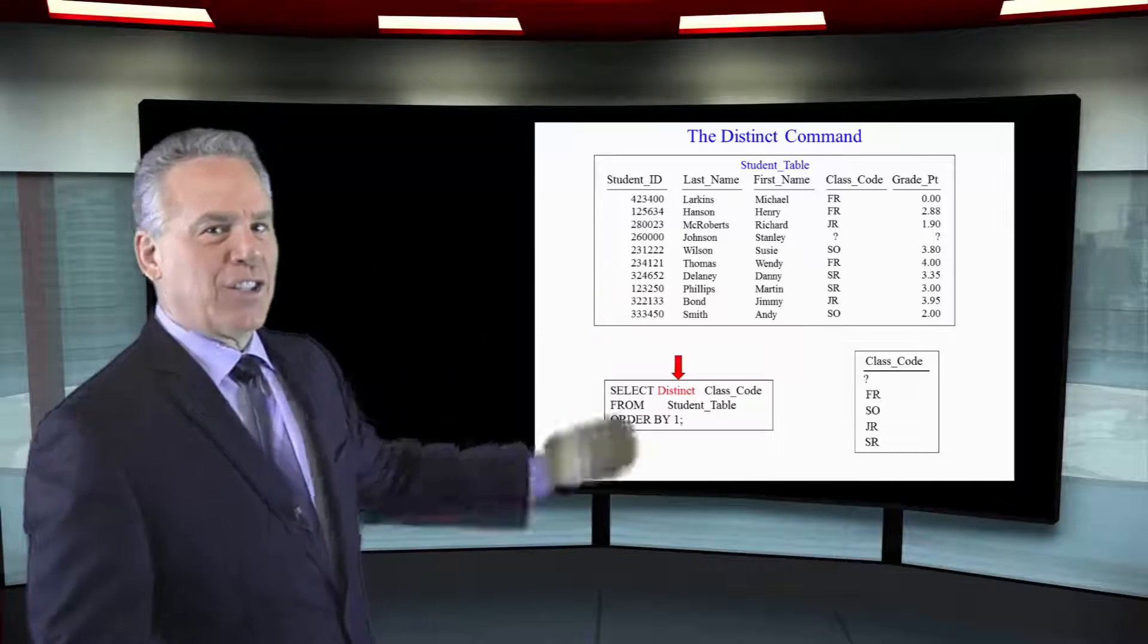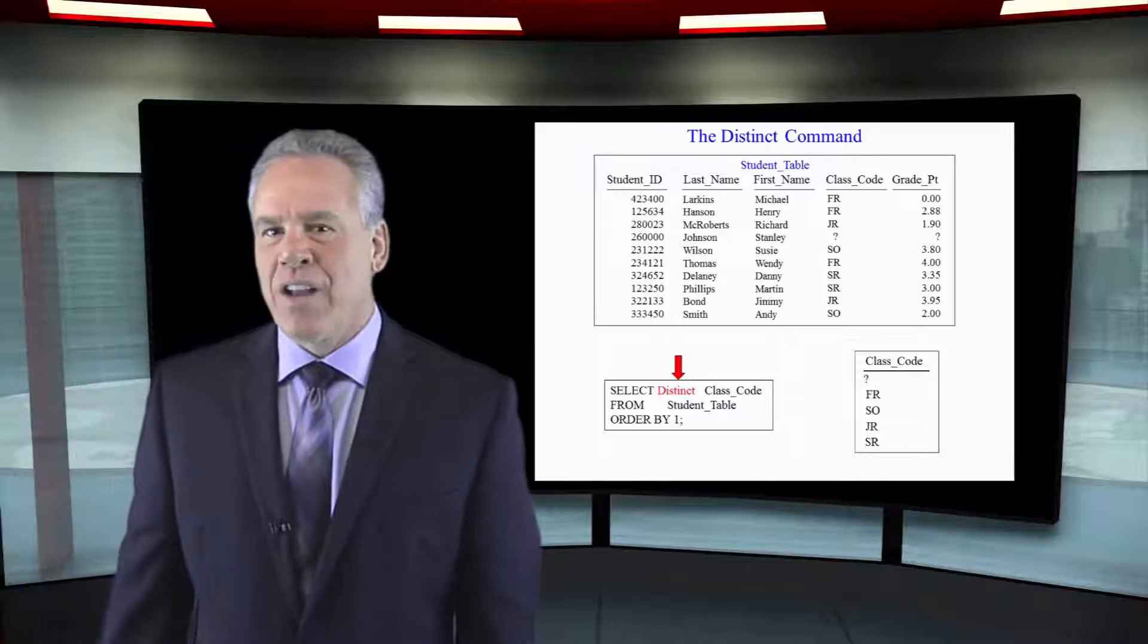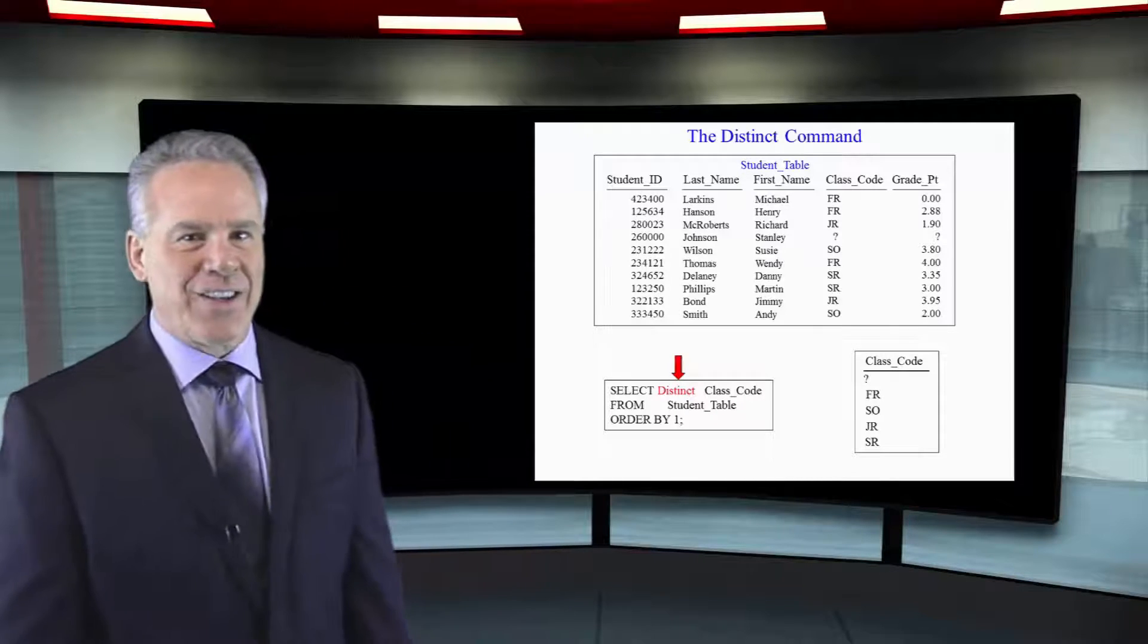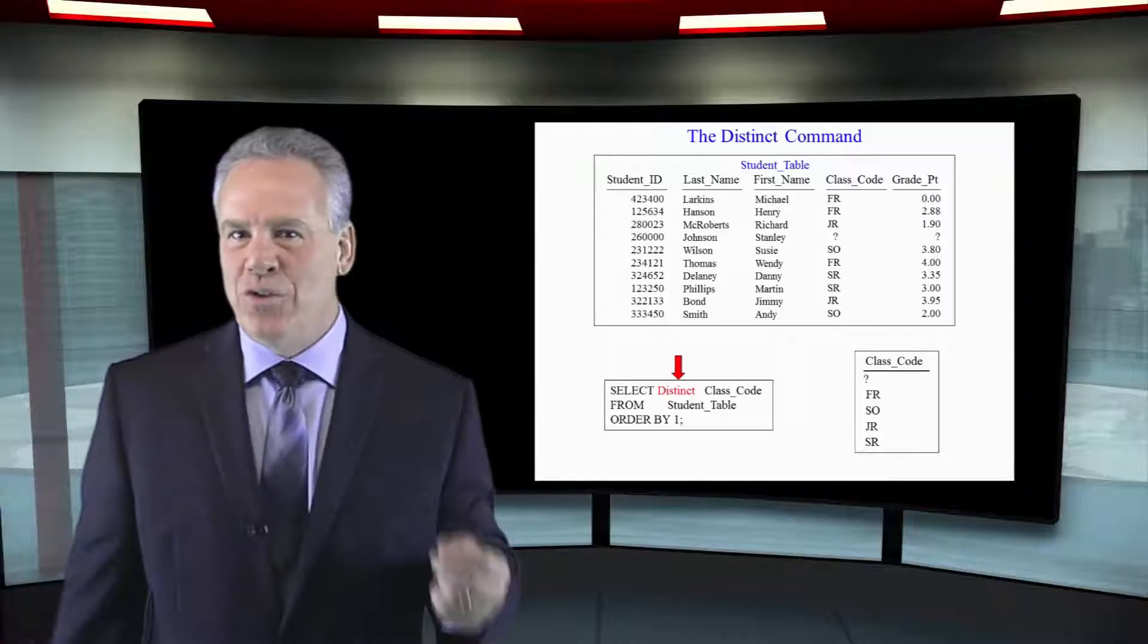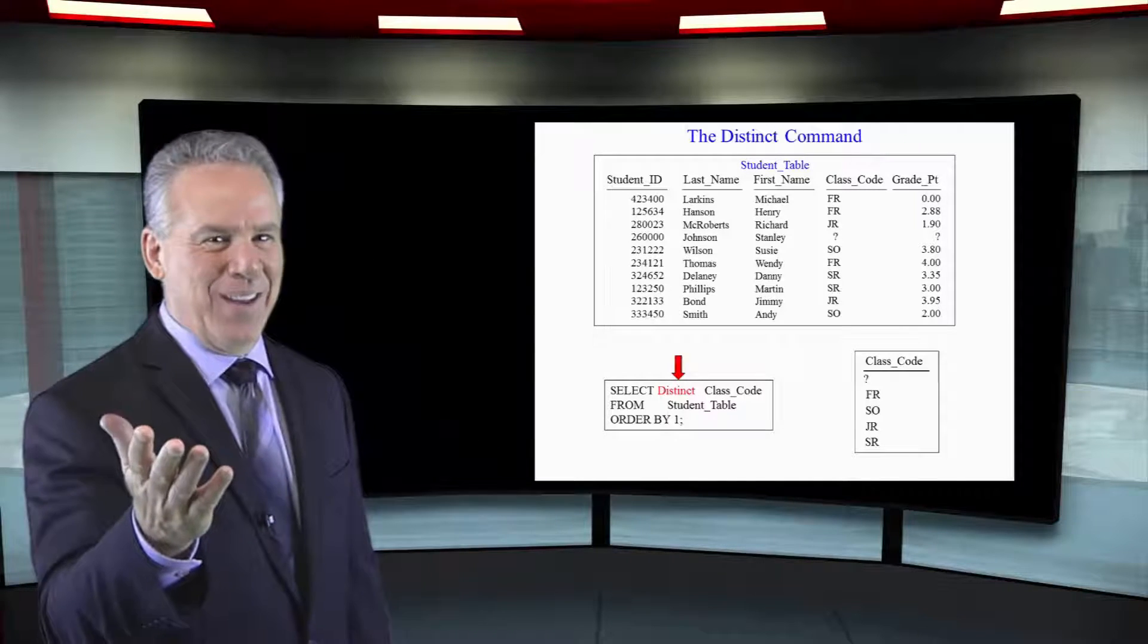I want you to look at my student table here. I've got all types of different class codes. Some freshmen, some sophomores, some juniors, some seniors, and I have a null value in there.